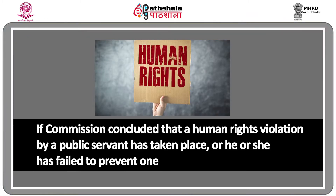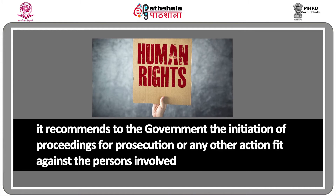If the Commission is not satisfied, it will enquire into the complaints and take few steps. If the Commission concludes that a human rights violation by a public servant has taken place or he or she has failed to prevent one, it recommends to the government the initiation of proceedings for prosecution or any other action against the persons involved. It can also, on behalf of the complainant, approach the higher judiciary for redressal. It can recommend to the government the grant of immediate interim relief to the victims and their families. The authorities have the responsibility to respond to the recommendations of the Commission with an action taken report within one to three months depending upon the nature or gravity of the complaint.